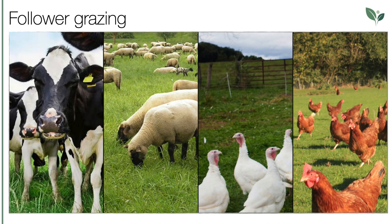A few days after the cows have moved over the pastures, the chickens are happy about their legacies — because the cow patties are now teeming with insect larvae, which excite the chickens. In doing so, they scrape apart the locally fallen fertilizer, leading to more homogeneous distribution. Other animals can be kept in between, which have different feeding needs than the cows. In this way, significantly more animals can find food on the same area and at the same time increase soil fertility.